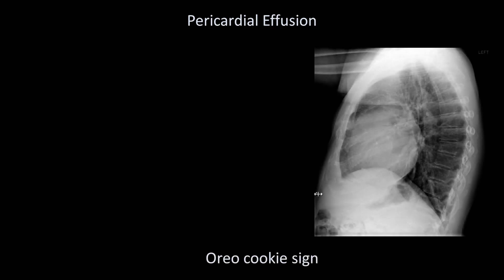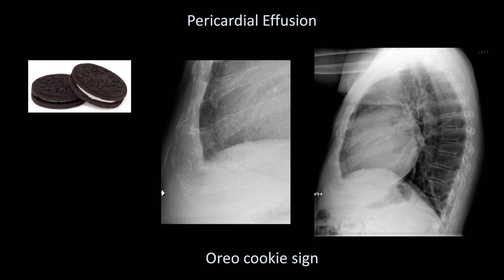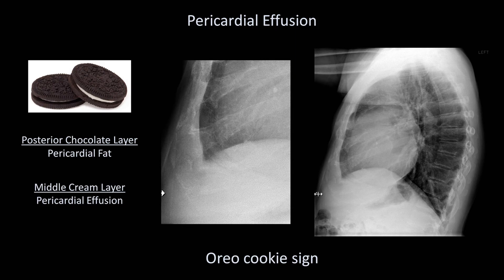The Oreo cookie sign is seen on the lateral film. To understand what you're looking at, you'll need to know what an Oreo cookie looks like — it consists of a layer of white cream sandwiched between two dark, supposedly chocolate-flavored discs. You can see the same configuration in front of the heart, just above the diaphragm. It's not normal to have three layers discernible here. The posterior chocolate layer, which is relatively radiolucent, is the pericardial fat. The middle cream layer, which is relatively radiodense, is the pericardial effusion. The anterior chocolate layer is the epicardial fat. This sign exists because fluid absorbs ever so slightly more x-rays than fat does.